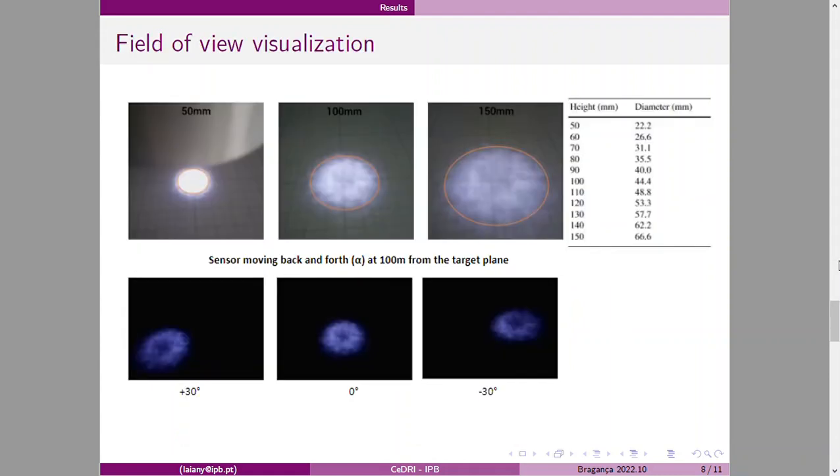For the last test, it was possible to visualize the sensor field of view and the geometries were very consistent with the data sheet and calculated values. In the first figure, for example, at 50 mm of distance from the target, the circle reached approximately two squares in the paper. Each square has 10 mm, totalizing 20 mm, which is close to 22.2 mm in the table.